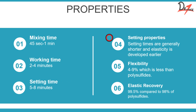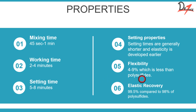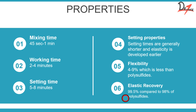Setting times are generally shorter and elasticity is developed earlier. Flexibility is four to nine percent, which is less than that of polysulfide, so condensation silicone is less flexible than polysulfide. It has 99.5 percent elastic recovery compared to 98 percent for polysulfide, meaning it has better elastic recovery than polysulfide.